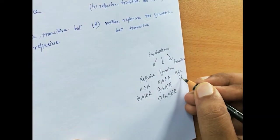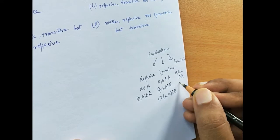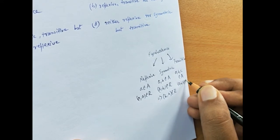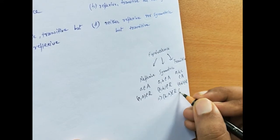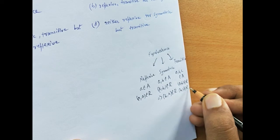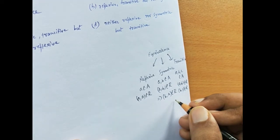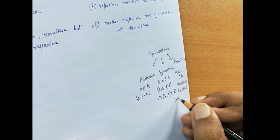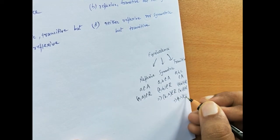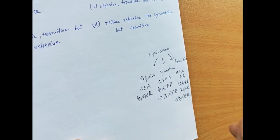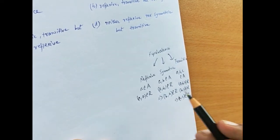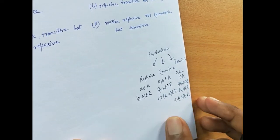Transitive means if A, B, C belong to set A, and (A, B) belongs to relation R, and (B, C) belongs to relation R, then (A, C) will also belong to relation R. If this condition holds, we call it a transitive relation.